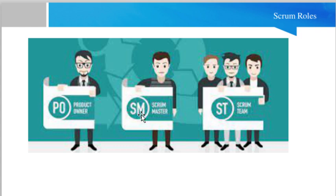The second role is the Scrum Master, who is basically a facilitator for the Scrum team or the product owner. The Scrum Master has complete knowledge about the Scrum framework, Scrum methodology, and industry best practices for implementing Scrum. He will resolve any problems and issues coming to the Scrum team and ensure all best practices of the Scrum framework are implemented.